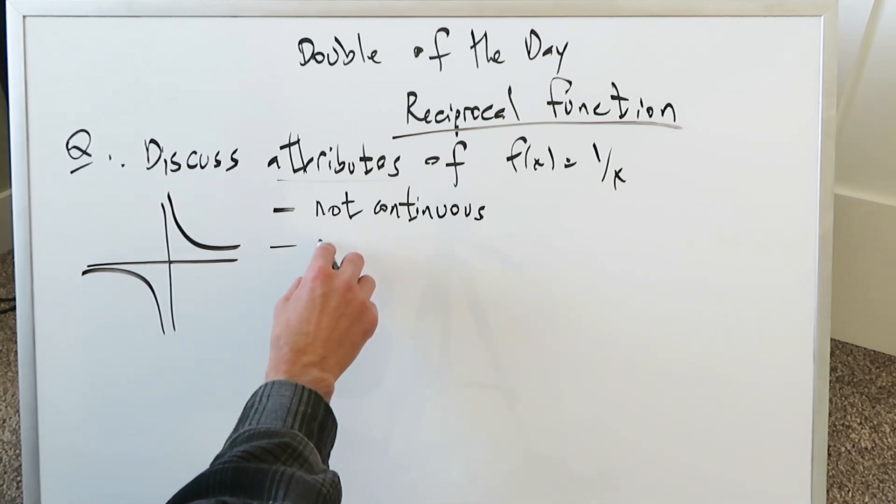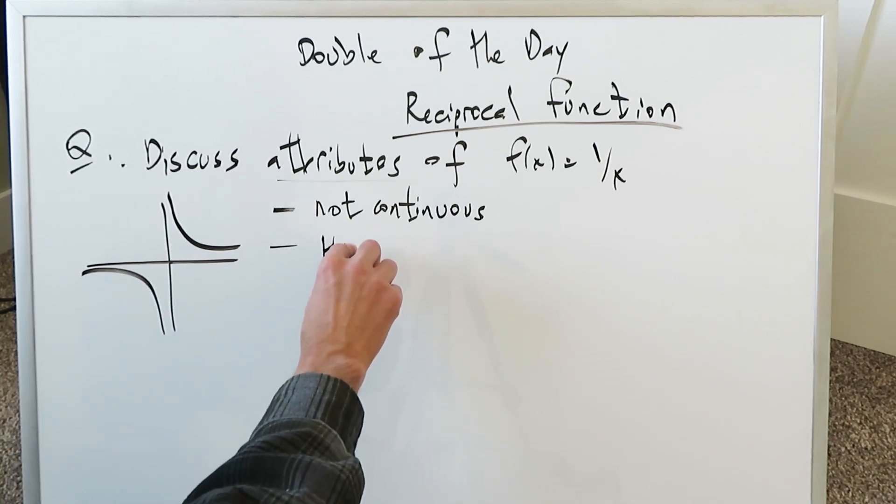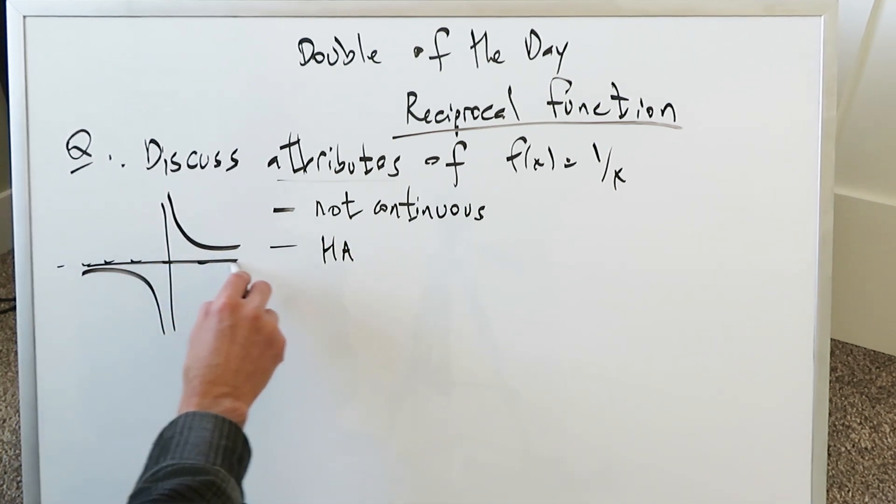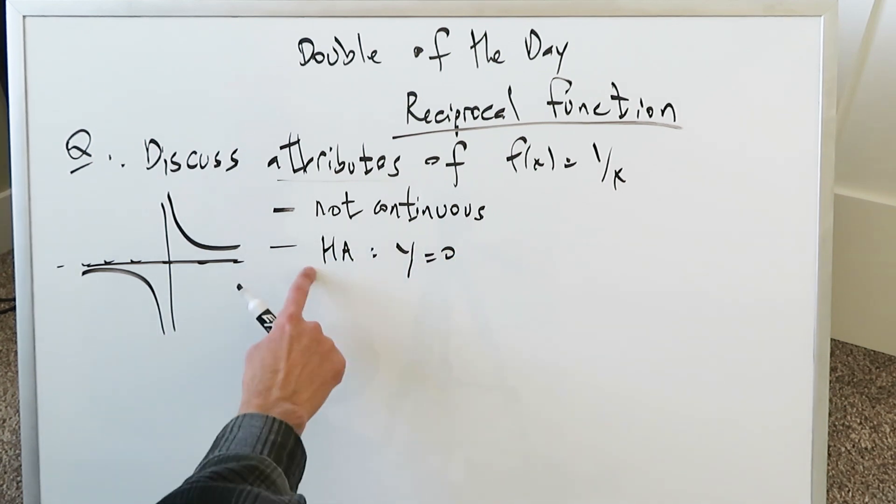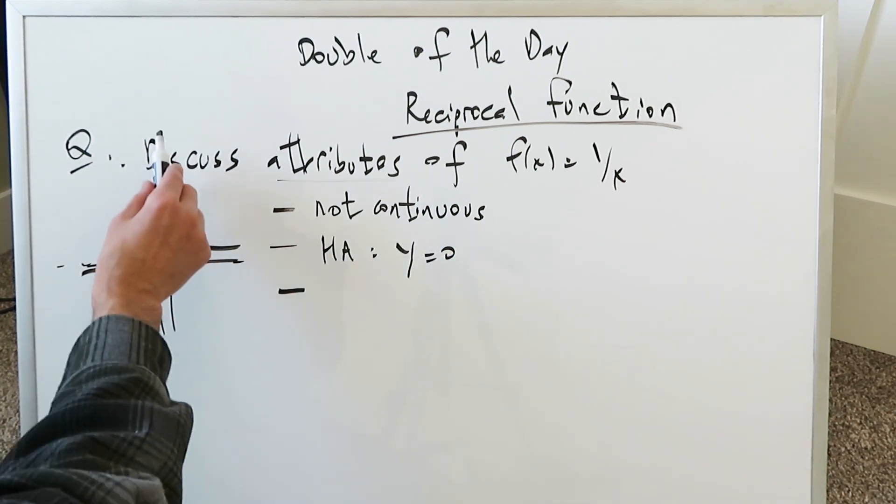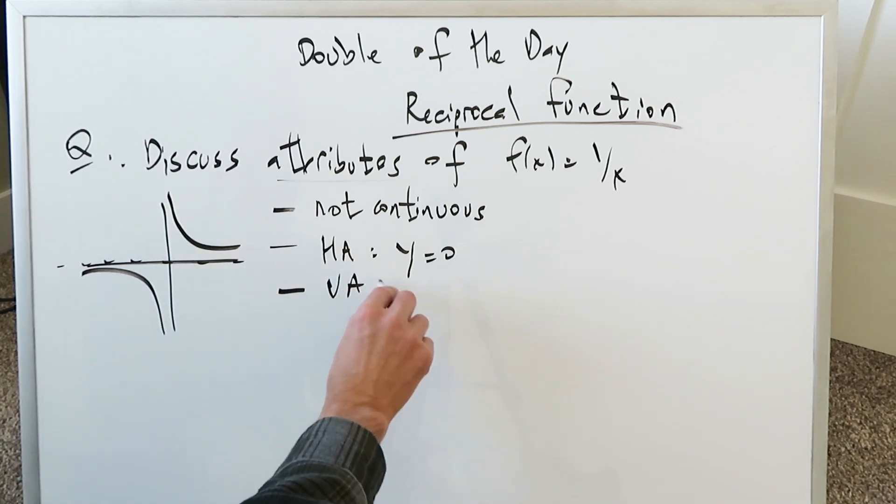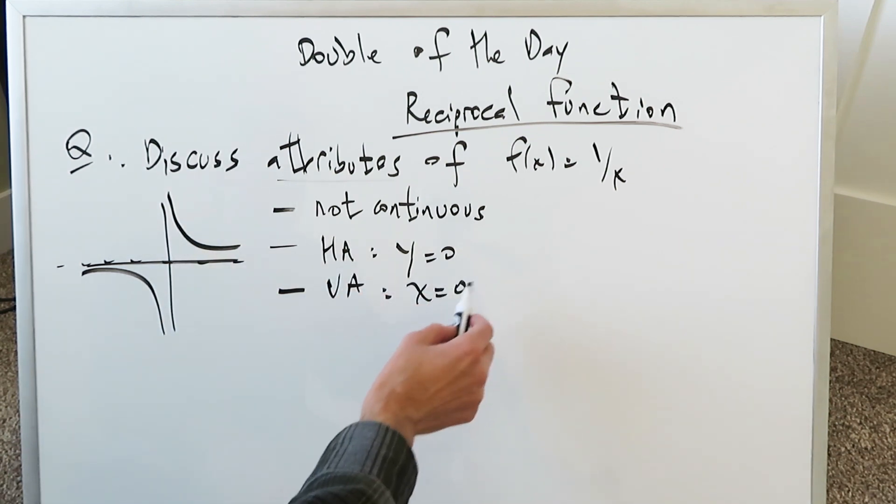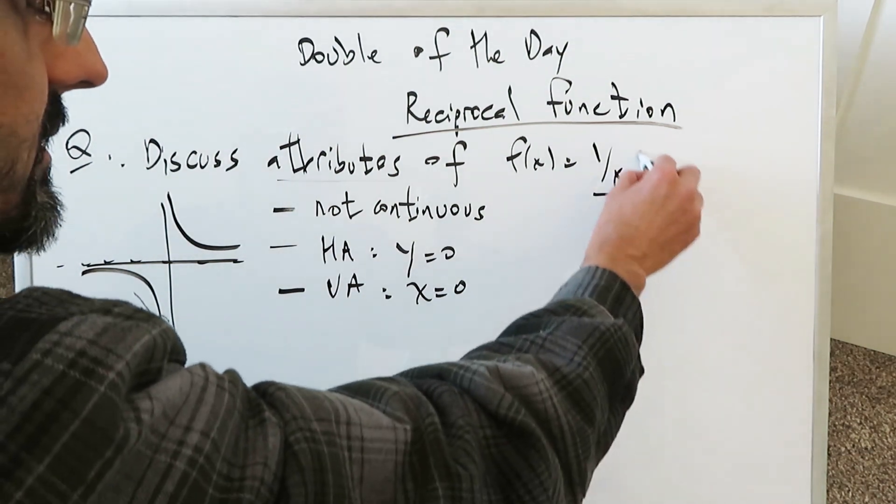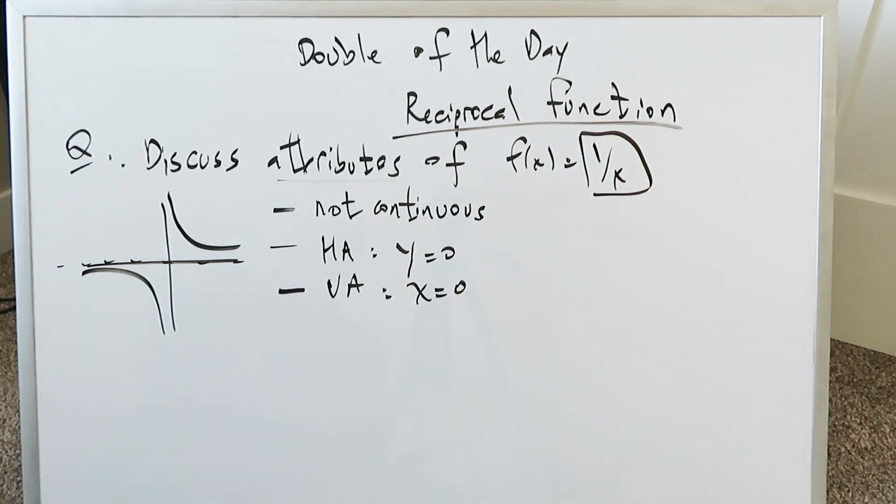And the other one is that it has two asymptotes. There's a horizontal asymptote right over here, which is your y equals 0, the x-axis. It also has a vertical asymptote, x equals 0, the y-axis. And remember, we're here referring only to this, the unmodified reciprocal function, which has not been translated or transformed in any way.